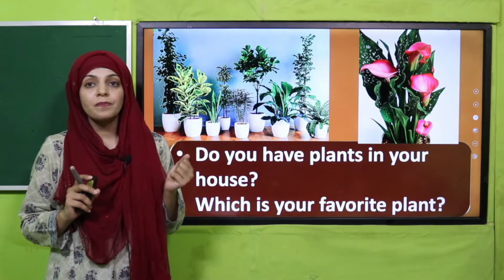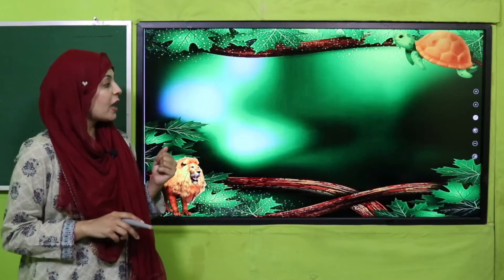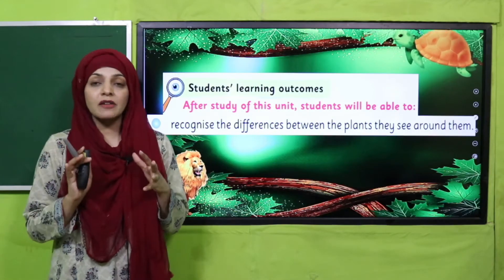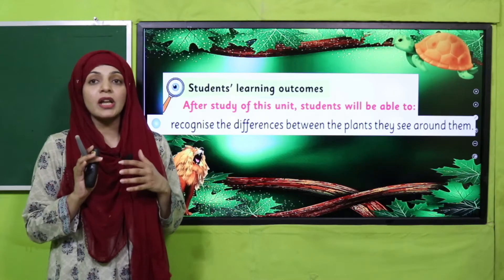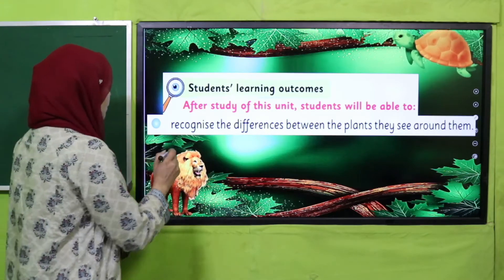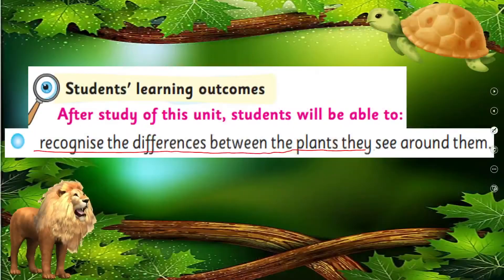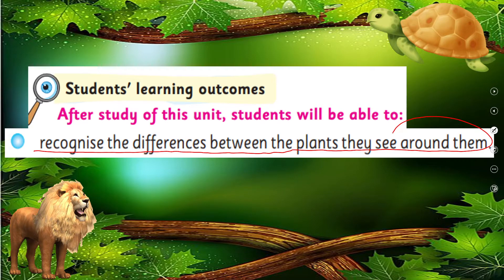Now let's look at today's objective. It states that the students will be able to recognize the difference between the plants they see around them. In the previous lecture we identified different plants; now students will be able to differentiate between them — how one plant is different from another.